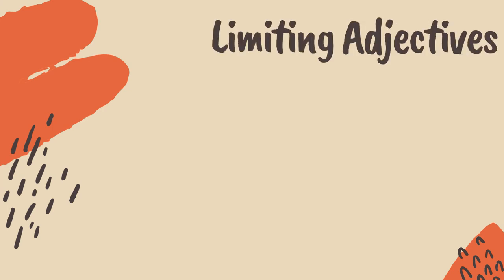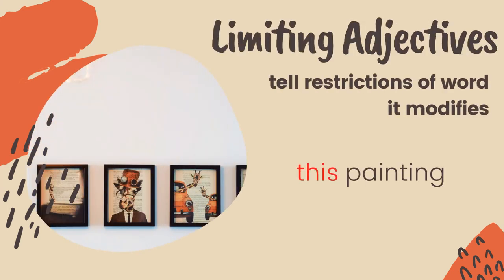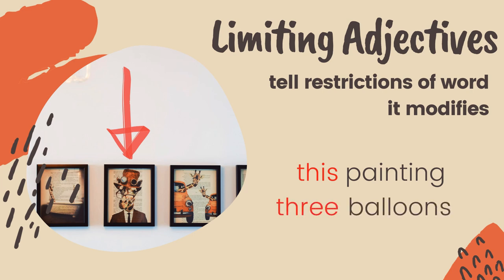Limiting adjectives tell the restrictions of the word it modifies. A limiting adjective defines the noun rather than describes it. For example, 'this painting' — the adjective 'this' pertains only to a specific painting, limiting the description to one painting. Another example: 'three balloons' — the word three is a limiting adjective that states the specific number of balloons.